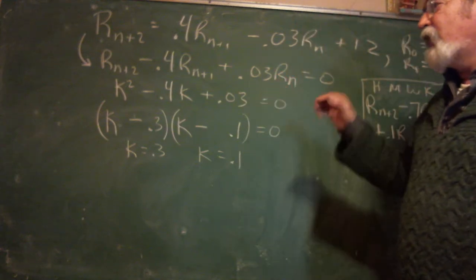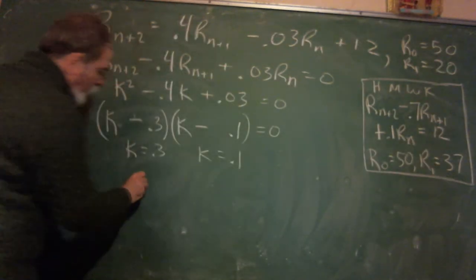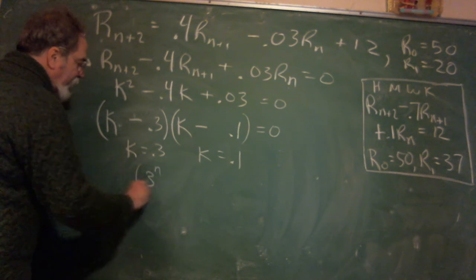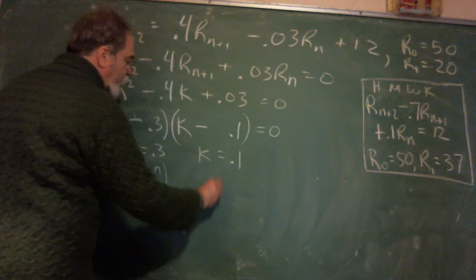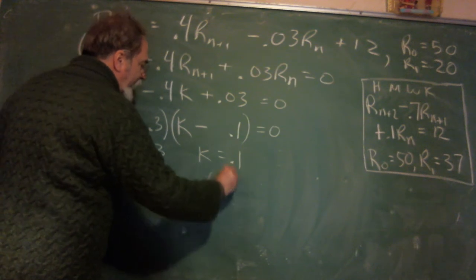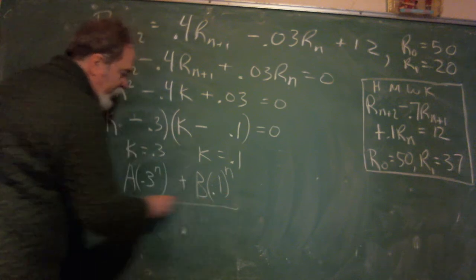I'm going one step beyond the book just doing this. I don't want to go five more steps beyond. Anyway, so these are our two roots. Point 3 and point 1 comes from factoring this characteristic equation. And instead of e to the point 3, each of these things becomes point 3 to the n, and it gets a coefficient. And this guy becomes 0.1 to the n, and it gets a coefficient. And this is my homogeneous solution.